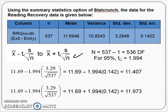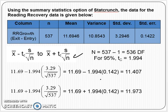Here's the table I created from StatCrunch. N is 537. The sample mean and the standard deviation — what StatCrunch gives you is actually the sample standard deviation, so this value is your S, your sample standard deviation. With a sample of 537, the degrees of freedom is 537 minus 1, or 536 degrees of freedom.